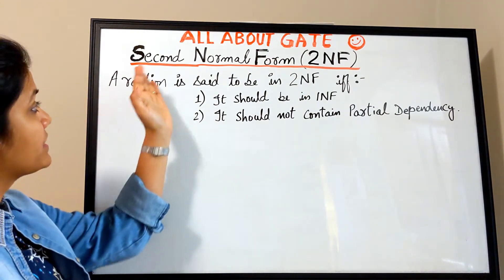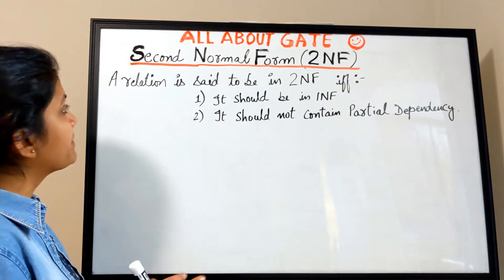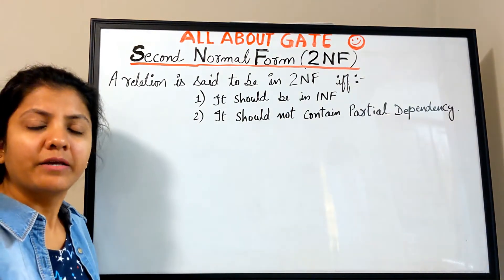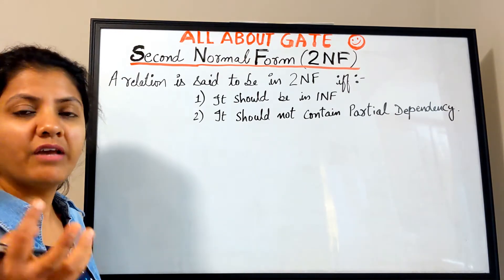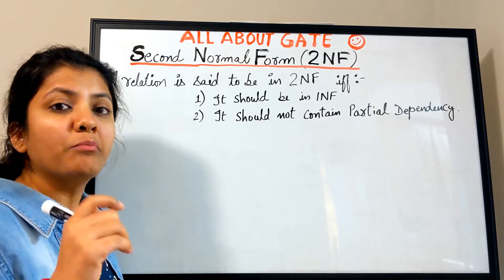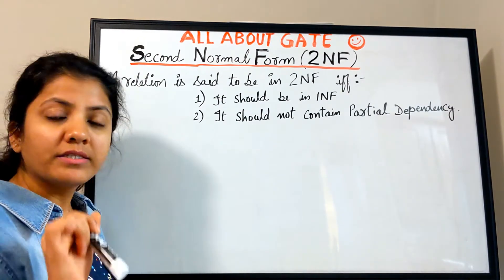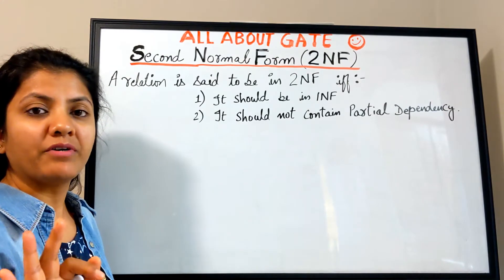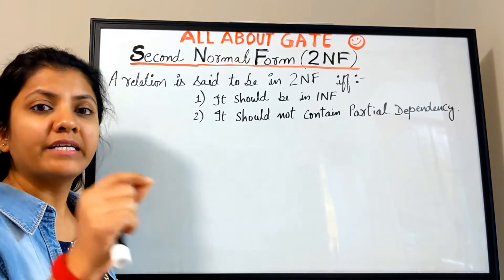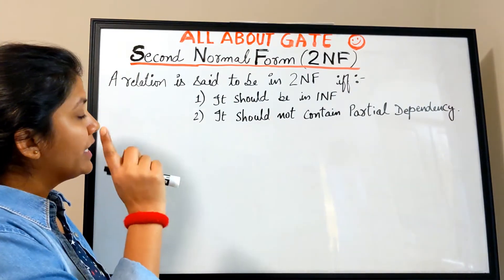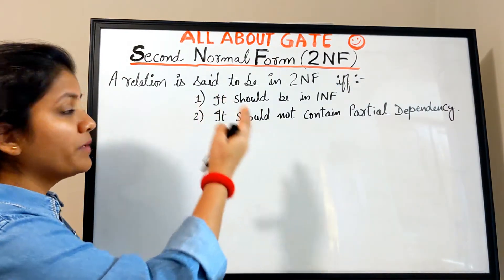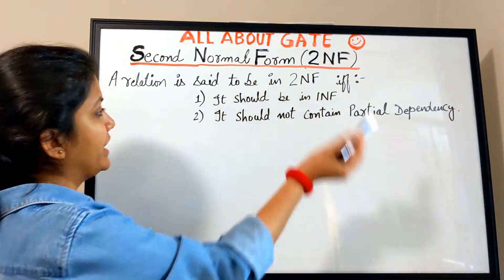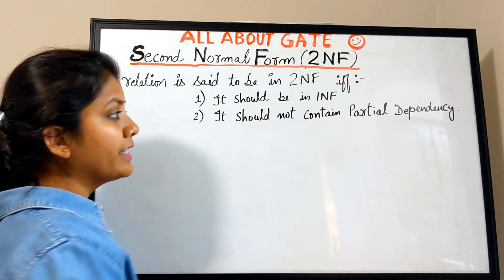Let's start with the second normal form, 2NF. A relation is said to be in 2NF if and only if it is already in 1NF — meaning it has no multi-valued attributes, so across every column and row there is always a single value — and second, it should not contain partial dependency.